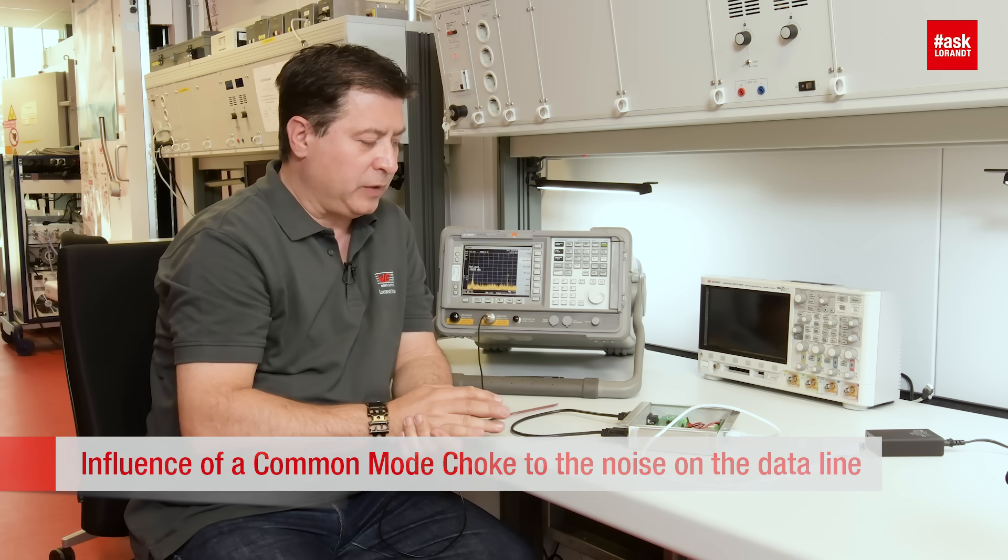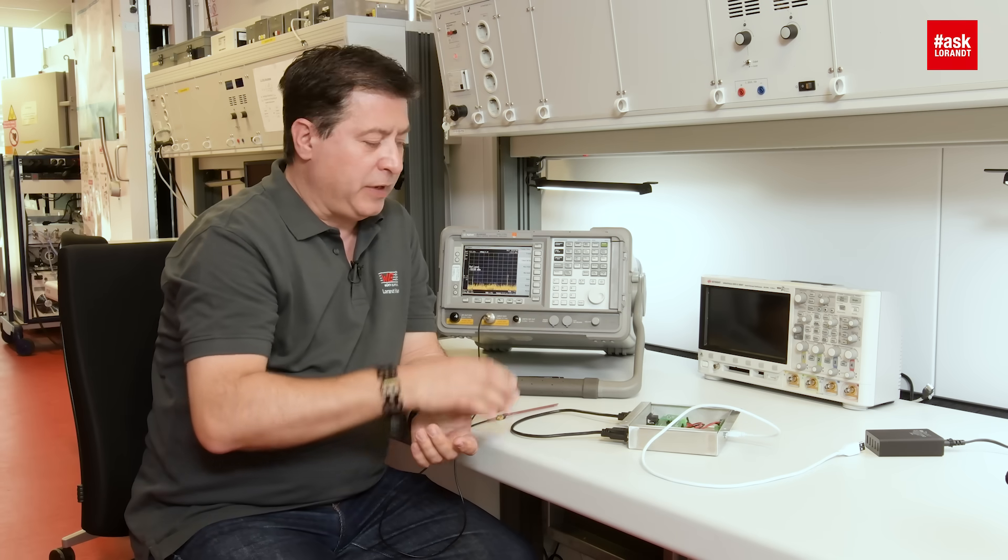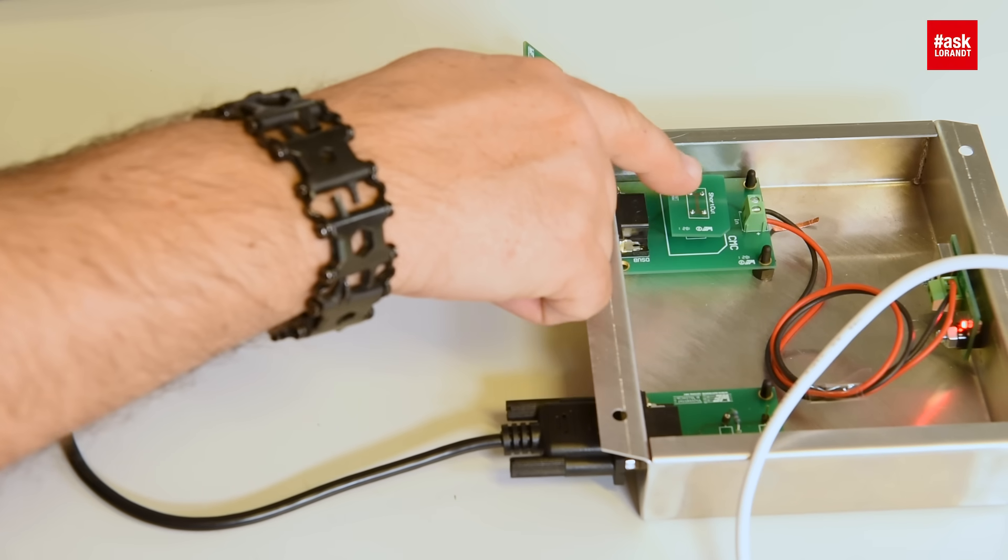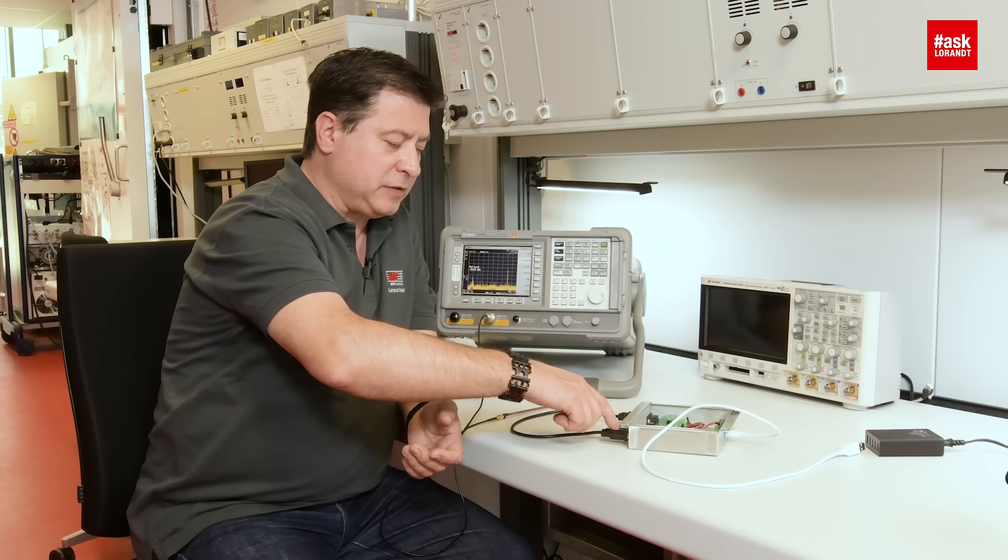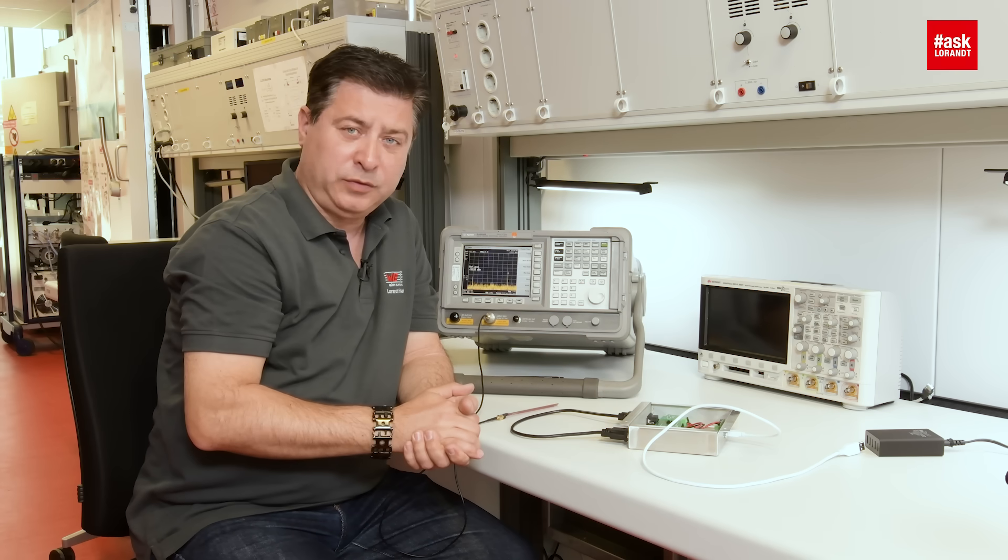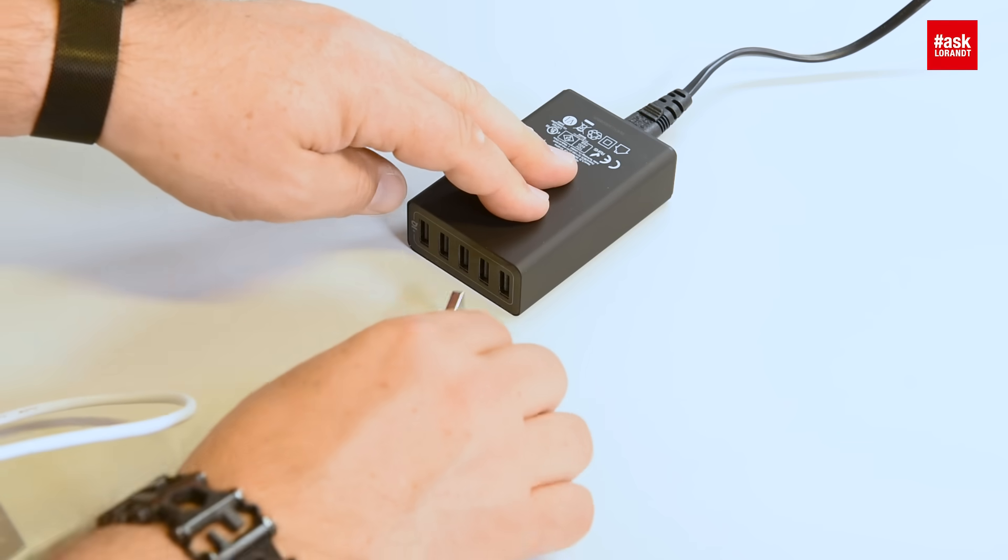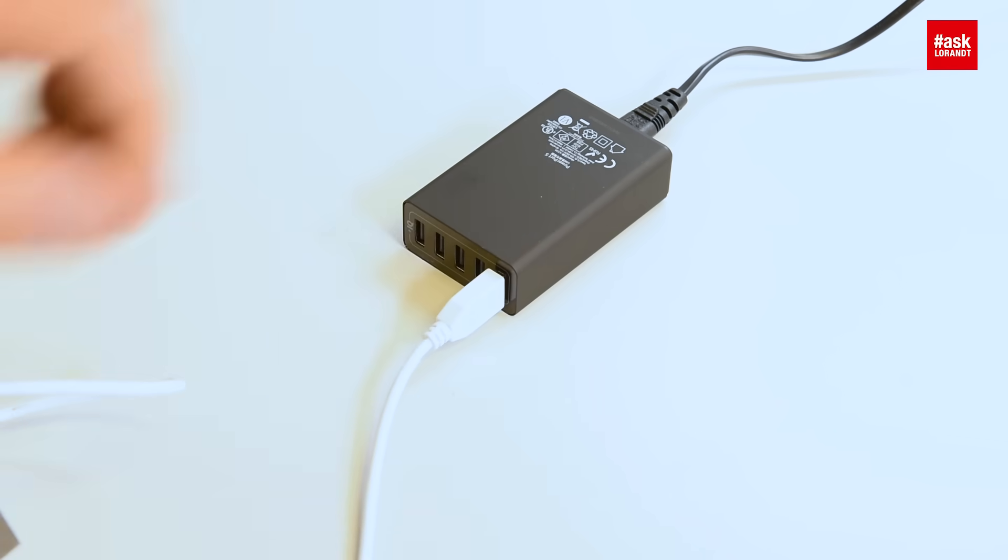We have here a small box where we have a small oscillator that makes a rectangle signal and they are transmitting by D-sub connector to another D-sub cable by a D-sub connector and have a load. It's a termination of 50 ohm and as soon as we power on this small oscillator you will see some noise.